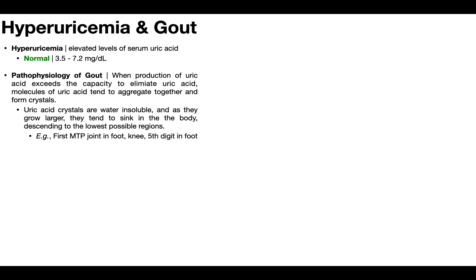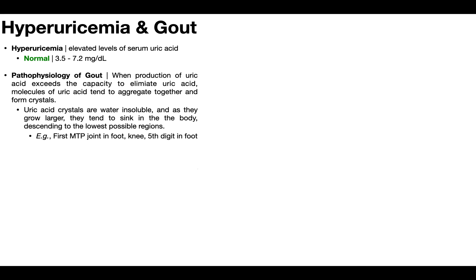In the next video, we're going to continue talking about hyperuricemia and see how it can develop into gout. Hyperuricemia refers to blood levels of uric acid, but when those uric acid molecules crystallize, we see gout or gouty arthritis. Make sure to join us in the next video.